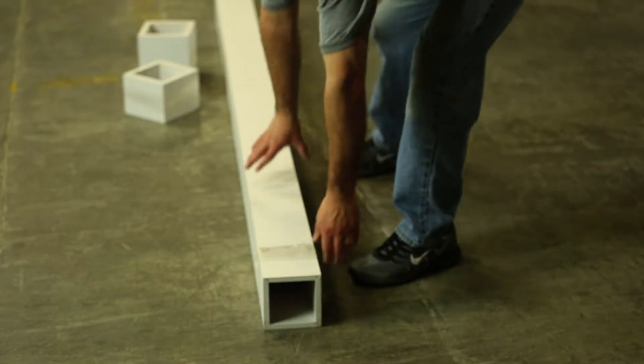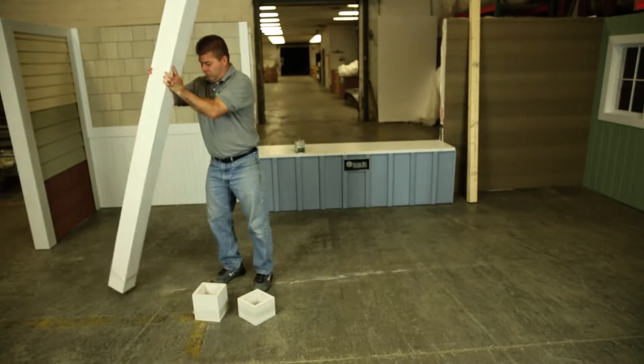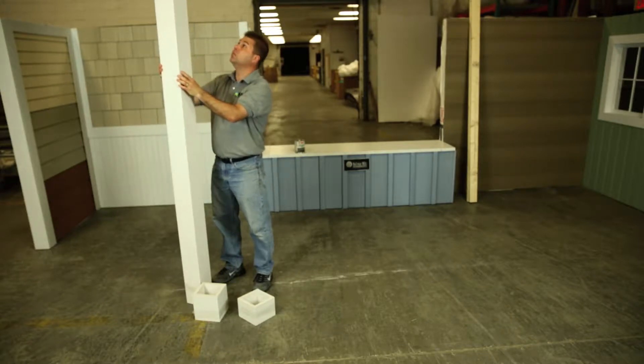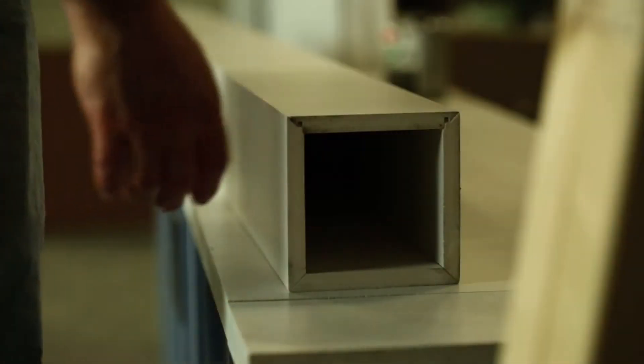We offer PVC columns that are 5 inch and 7 inch. These are for posts that are 4 inch and 6 inch. Our columns are pre-made as two piece columns.